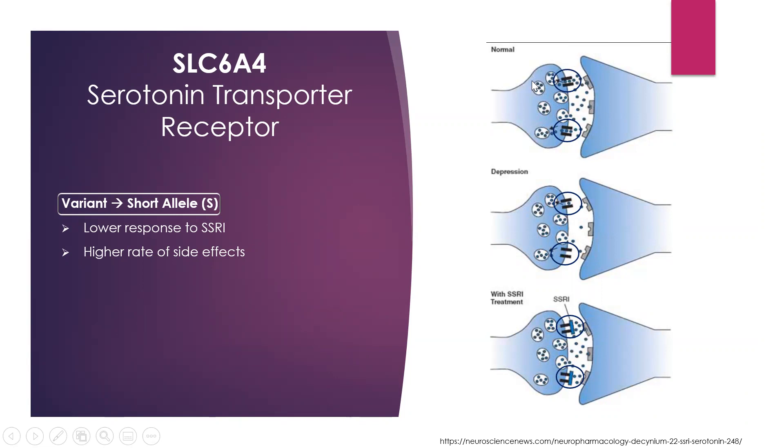If a patient has a variant of the SLC6A4 that's short, that means these receptors—I know it only shows two here—however, there are more transporters on the synaptic cell.